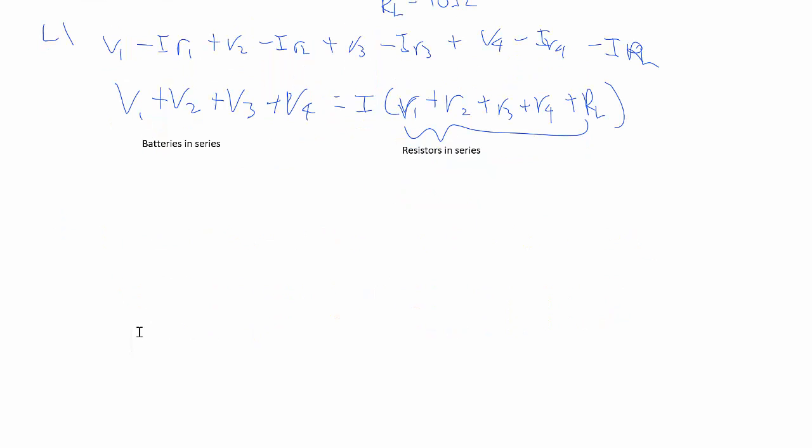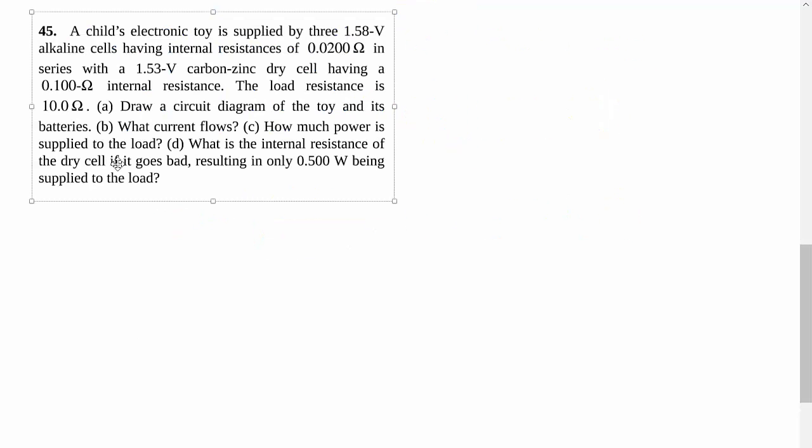Subbing in the numbers, we'll get that my i is equal to 6.27 volts over 10.16 ohms. Then we get the current, which is what we want for part B.